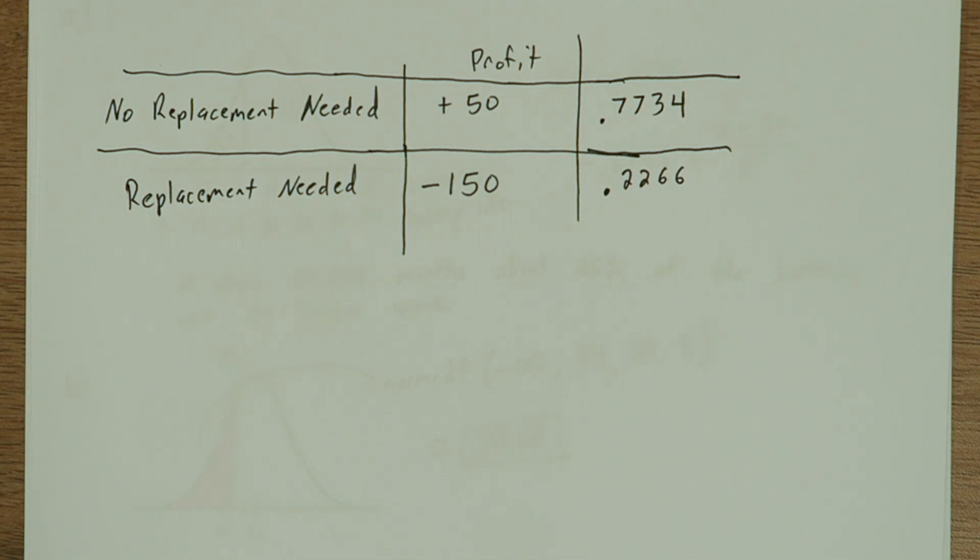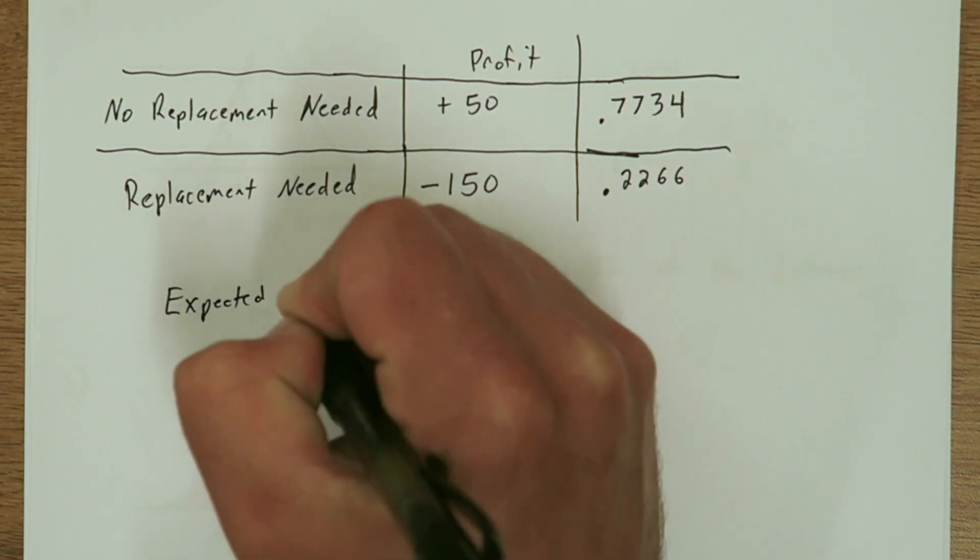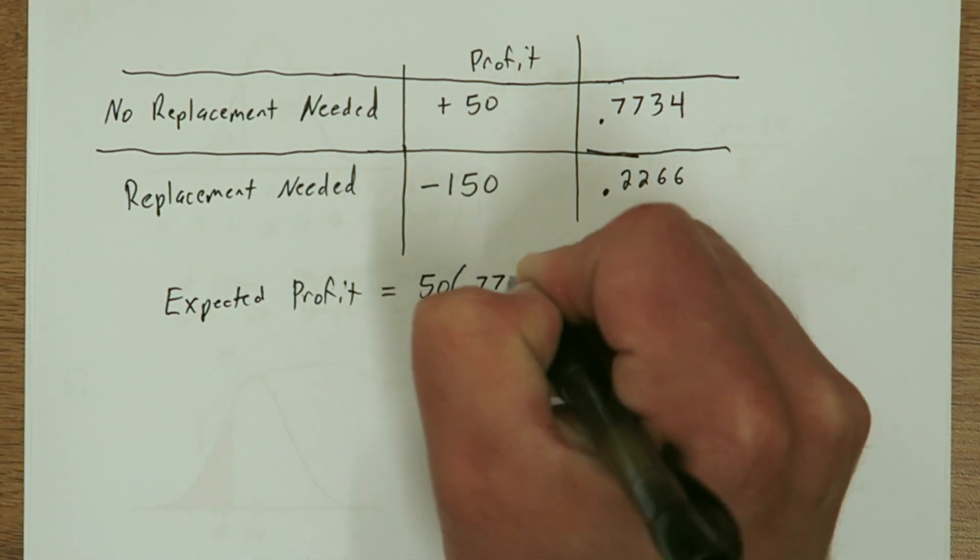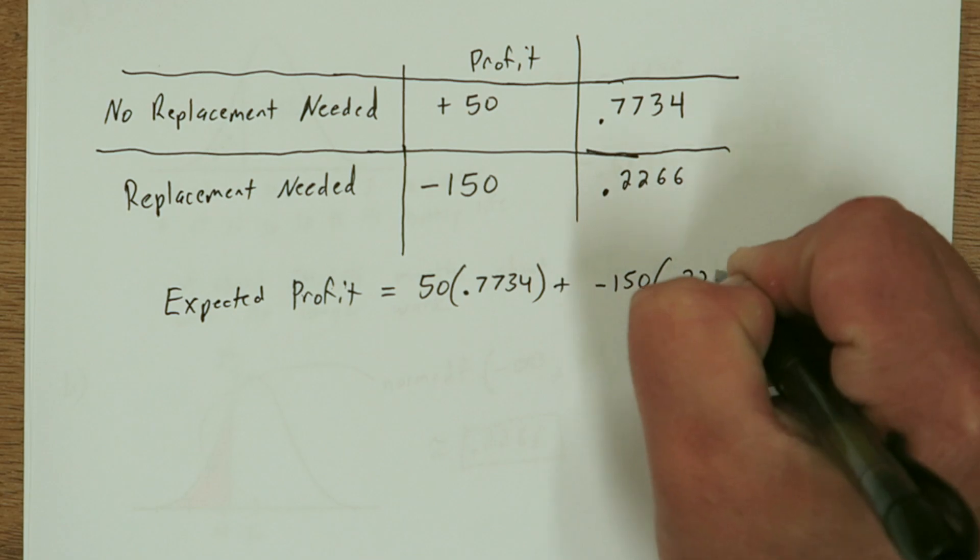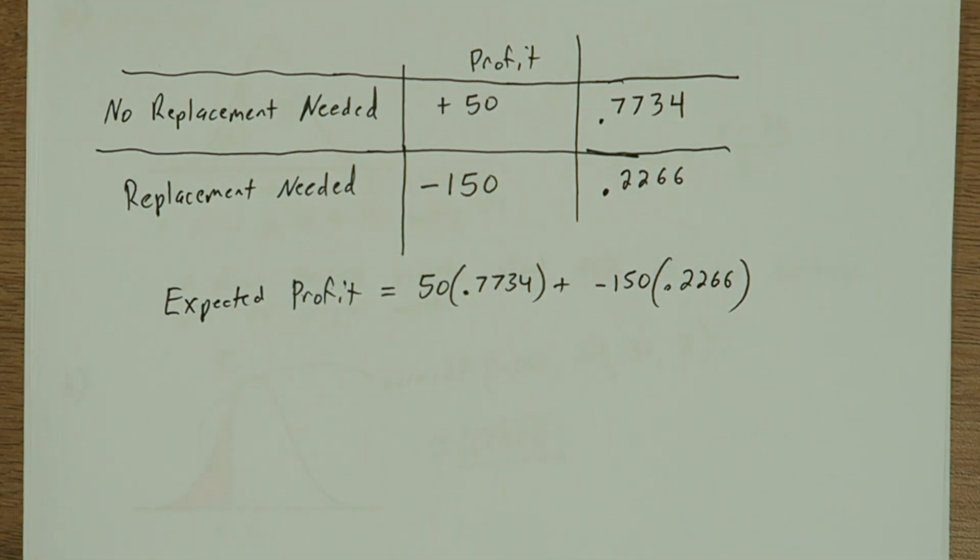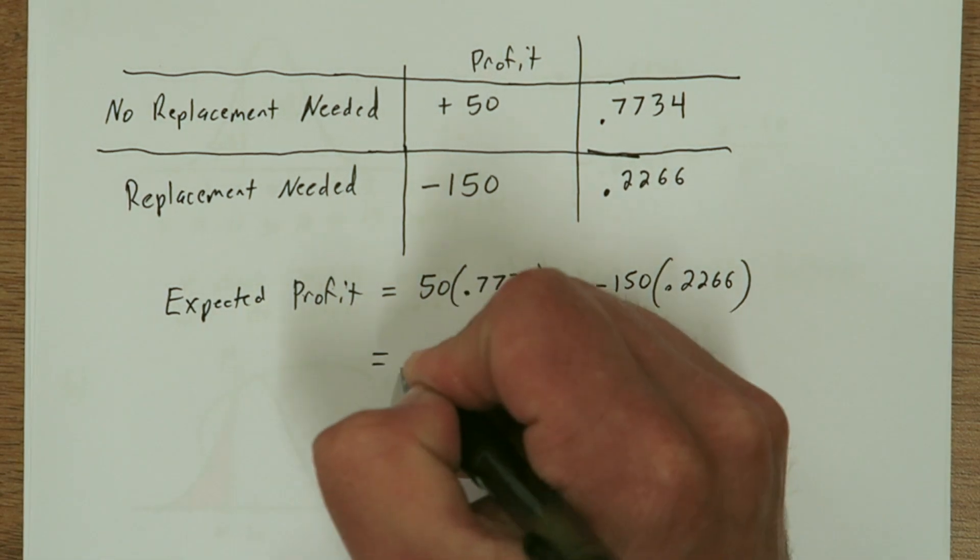And the complement of 0.2266, so 1 minus 0.2266, is 0.7734. To find any expected value, you multiply each value of your discrete random variable by the probability, and then add all of those up. So in this case, we have 50 times 0.7734.